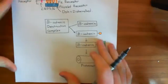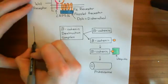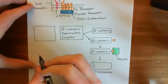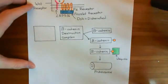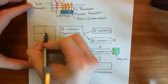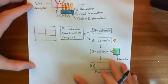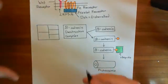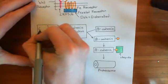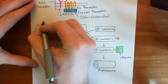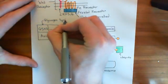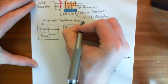The beta-catenin destruction complex is made up of five different proteins. The first is a protein known as axin. Another is glycogen synthase kinase-3, or GSK-3.